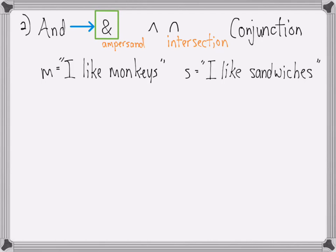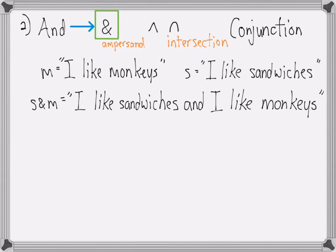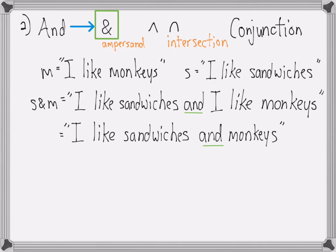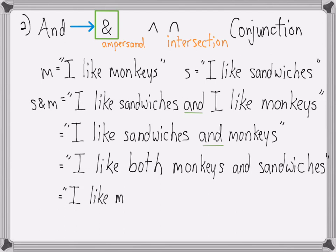If the variable m stands for 'I like monkeys' and s stands for 'I like sandwiches', then s and m stands for 'I like sandwiches and I like monkeys'. We can rewrite that more simply as 'I like sandwiches and monkeys'. Notice how in both cases the word 'and' shows up in the full version. You could also write 'I like both monkeys and sandwiches' or 'I like monkeys, I like sandwiches'. In the second last case the word 'both' and 'and' go together. In the last example the comma replaces the word 'and'.